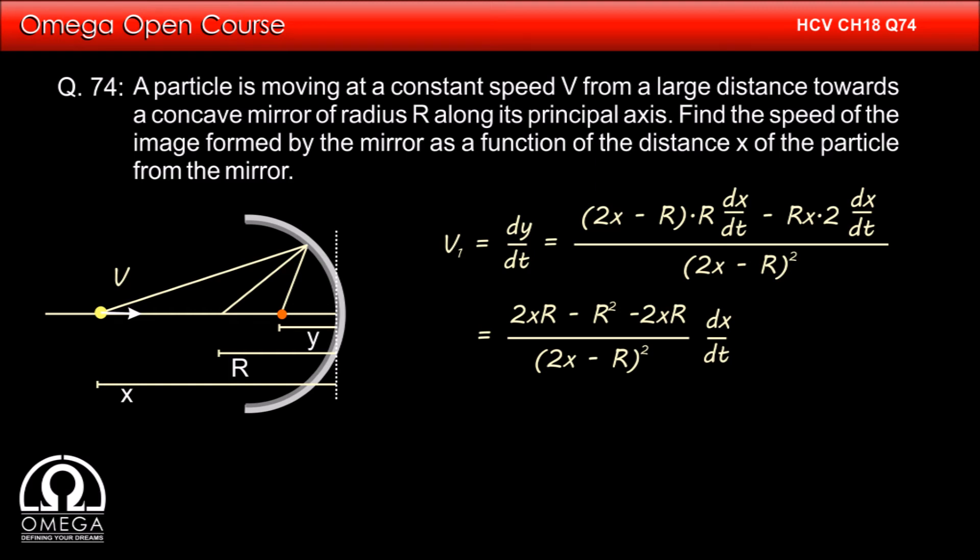Since the particle is moving towards the mirror, the value of x decreases with time. Therefore, dx by dt must be negative.